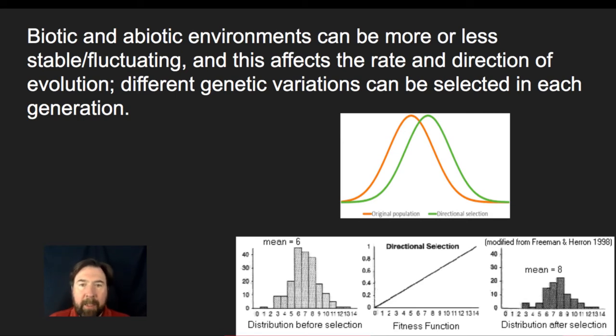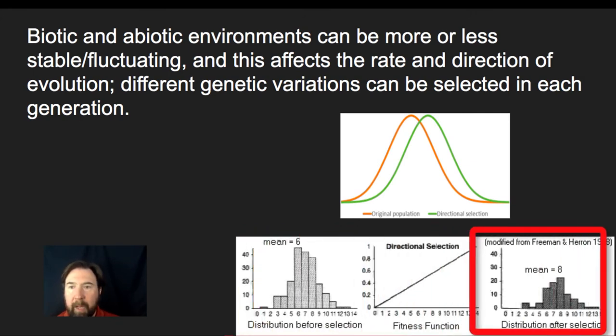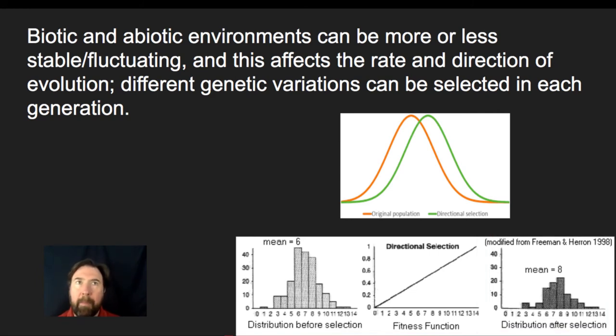You will have populations and depending on the stability or fluctuation of the environment, we may see shifts over time. One classic example we see here on the bottom: we have this distribution where there's an initial mean that's small, and then over time we see a mean that is larger with fewer individuals in the population. This could be used to talk about things like beak size of finches in the Galapagos before a drought and after a drought. After the drought, there were fewer smaller seeds, only large harder seeds, and therefore only those individuals with very large beaks were able to get enough energy by cracking those seeds to survive and reproduce.